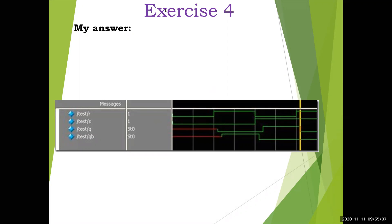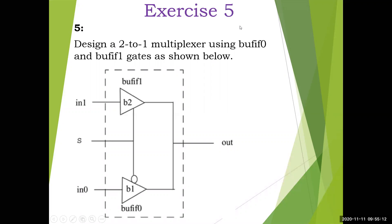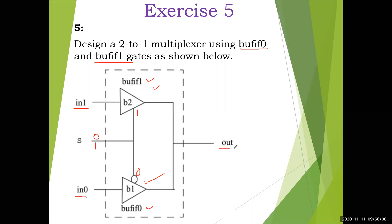Now we go to the next and last exercise. Design a 2-to-1 multiplexer using BUFIF0 and BUFIF1 gates — the gate-level diagram is already given. In1 and In0 are the inputs. BUFIF1 passes the input to the output only when a 1 comes on the control signal. BUFIF0 works only when there is a 0 on the control signal. In a 2-to-1 MUX, the select line S takes values 0 or 1: if 0, the lower input (In0) is selected; if 1, the upper input (In1) is selected.